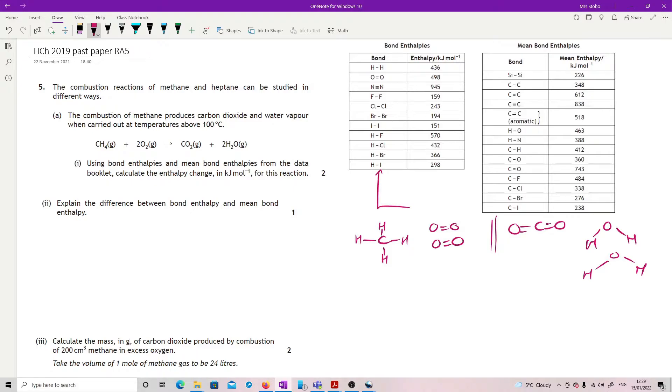You know that you've got a break and then make, so it's a plus and then a minus, and then you just add them up. So I have got four carbon to hydrogen. Carbon to hydrogen over here, 412. So four of them is 1648.